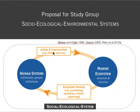Humans, through actions and interventions, can affect the marine ecosystem, and the marine ecosystem, through changes in the ecosystem services they provide, can affect the human system. The marine ecosystem services are categorized as provisioning, regulating, cultural, and supporting, as in the Millennium Ecosystem Assessment Report.